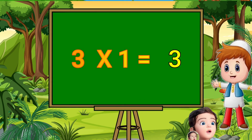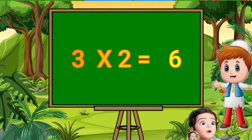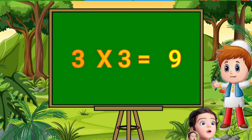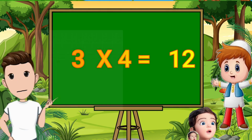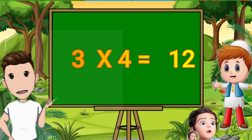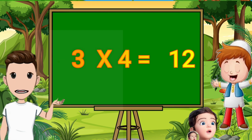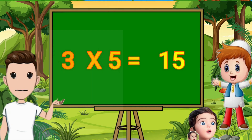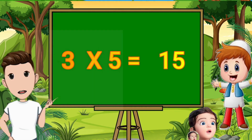Table of three. Three ones are three. Three twos are six. Three threes are nine. Three fours are twelve. Three fives are fifteen.